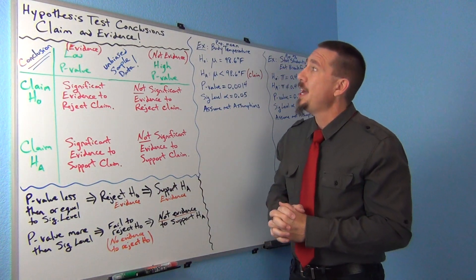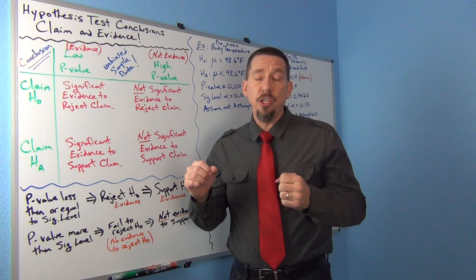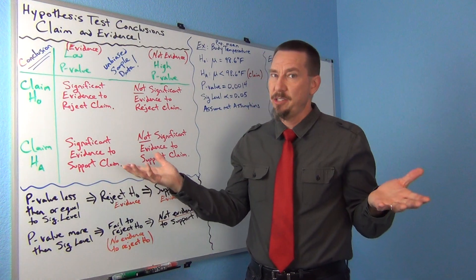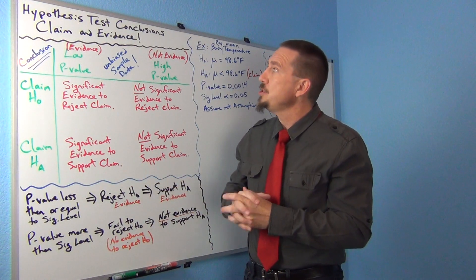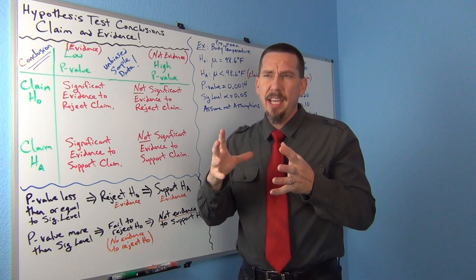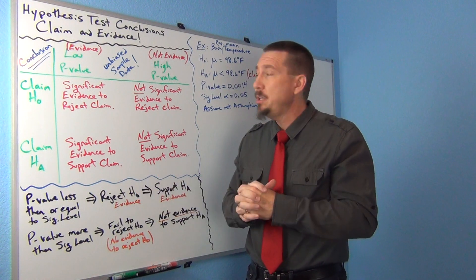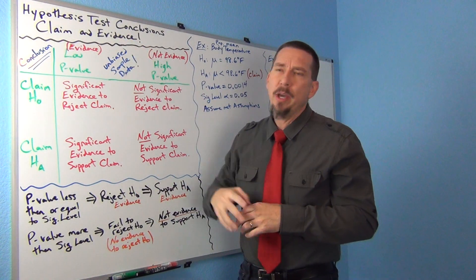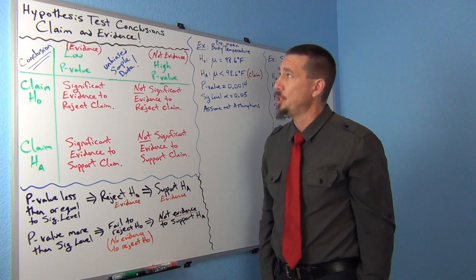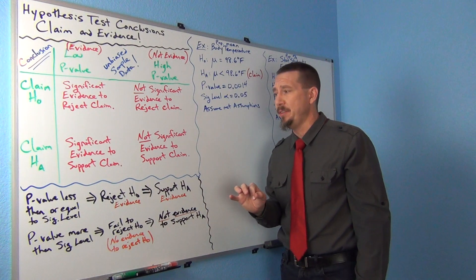The one thing about a conclusion is that saying you reject the null hypothesis or fail to reject the null hypothesis is not actually a conclusion. A conclusion has to address the claim — what the person in the article said or what the person asked you to figure out. You have to talk about whether or not you have some evidence towards what you're saying. It's really a statement about claim and evidence.